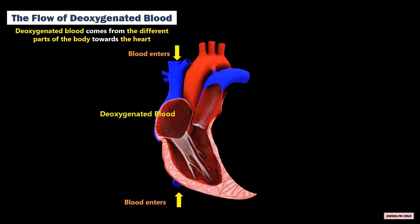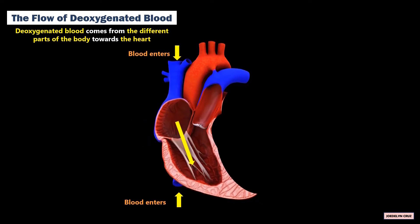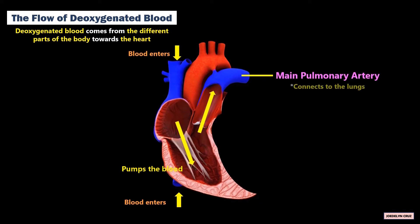The oxygenated blood moves from the right atrium to the right ventricle through the tricuspid valve. The right ventricle pumps the blood to the main pulmonary artery, which connects to the lungs.